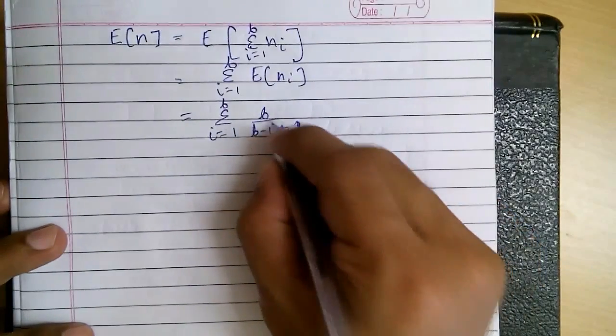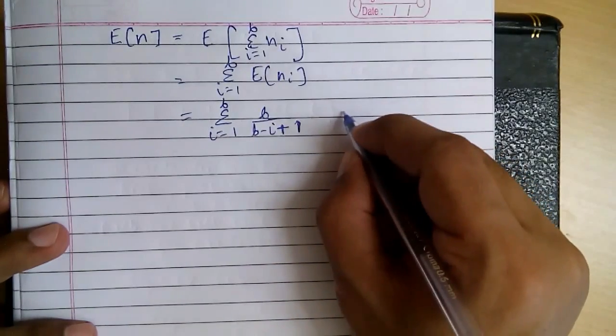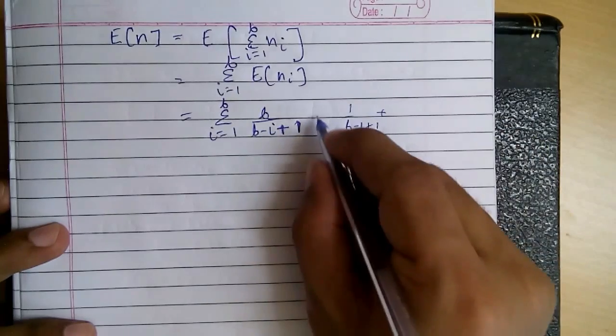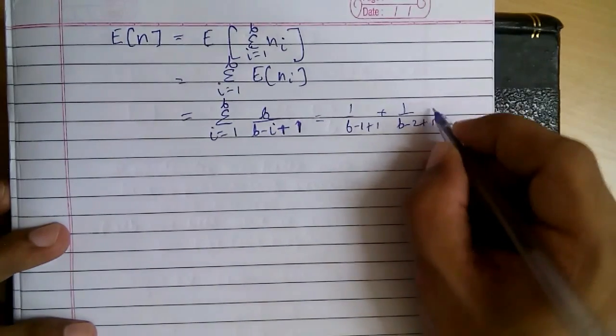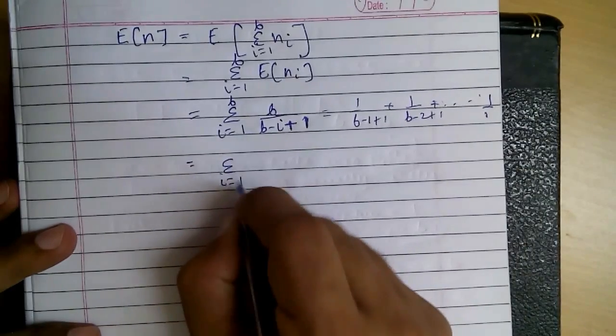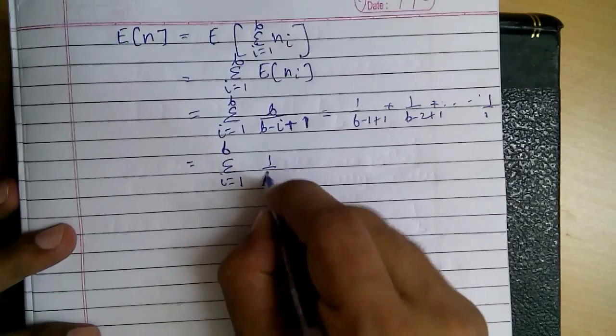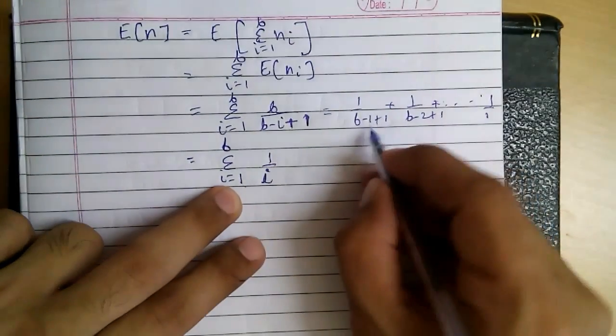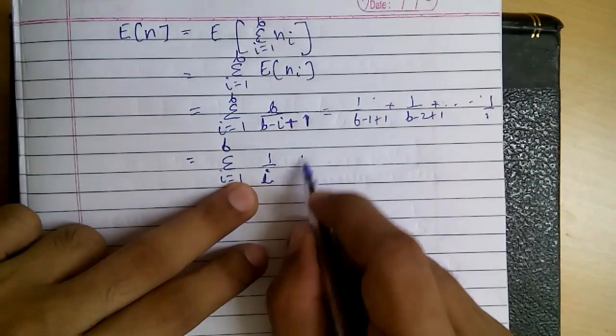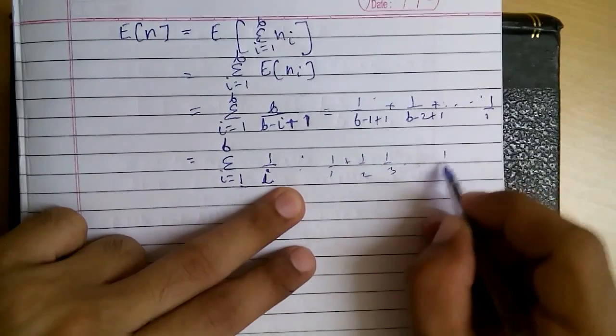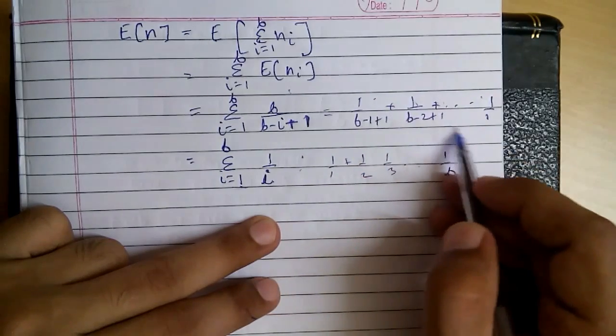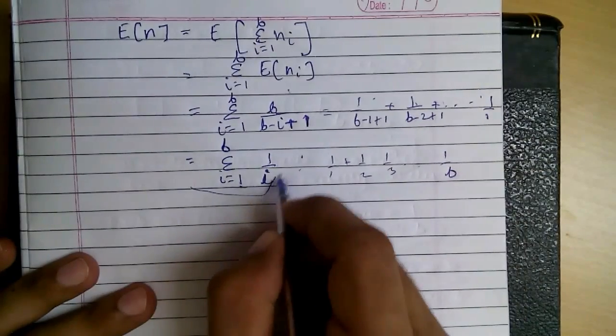So if you see that putting values of i, it will be 1 by B minus 1 plus 1, then 1 by B minus 2 plus 1, and go on till 1 by 1. So it is just actually simplified as 1 by i. So if you put i equal to 1, it is 1 by 1 plus 1 by 2 plus 1 by 3 till 1 by B, which is the same as 1 by B minus 1 plus 1, 1 by B minus 2 till 1 by 1. So hence this is simplified.